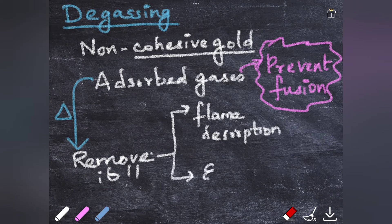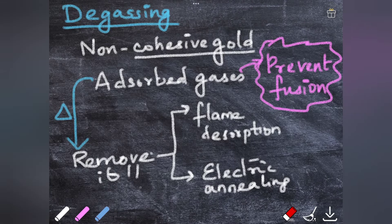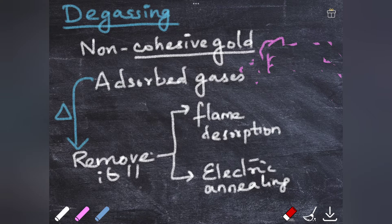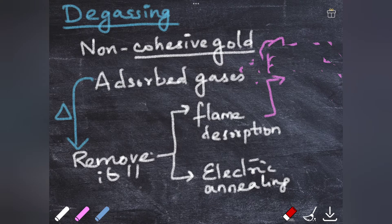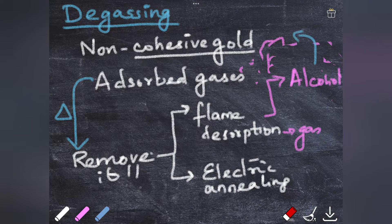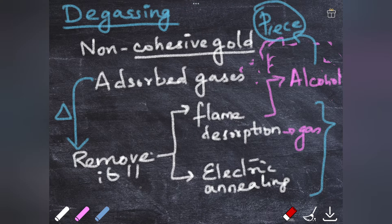How is this done? It can be done by heating over the flame or flame desorption, or it can be done electrically in an electric annealer. Flame desorption mainly uses two fuels - it can either be done using alcohol or it can use a gas.